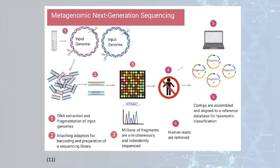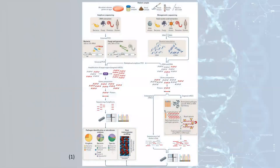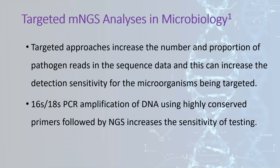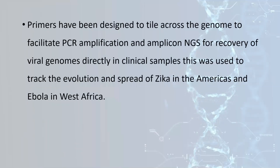Targeted MNGS analysis in microbiology: targeted approaches increase the proportion of pathogen reads in the sequence data, increasing detection sensitivity for microorganisms. Here, 16S or 18S rRNA PCR amplification of DNA using highly conserved primers, followed by next-generation sequencing, increases the sensitivity of testing. Primers have been designed to tile across the genome to facilitate PCR amplification and amplicon NGS for recovery of viral genomes directly from clinical samples. This approach was used to track the evolution and spread of Zika in the Americas and Ebola in West Africa.